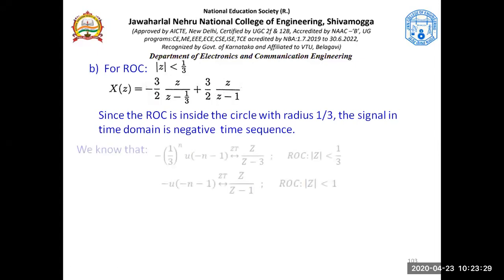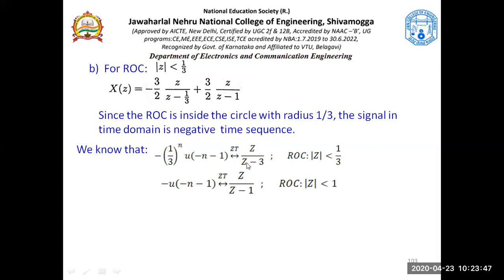To understand that, let's consider this. When can we have Z/(Z - 1/3) in the Z domain? This is 1/3 — mind you, make this 1/3. So this will be Z/(Z - 1/3) when the region of convergence is less than 1/3.